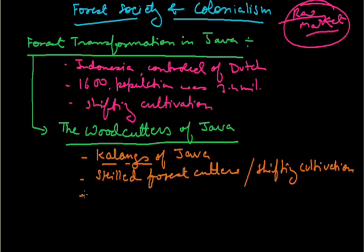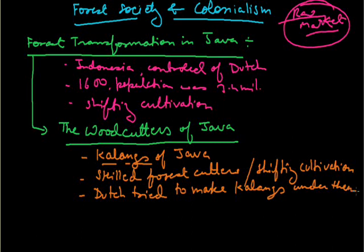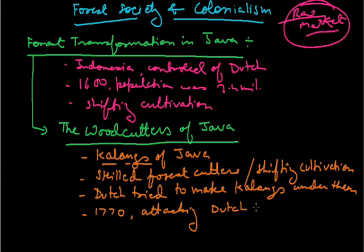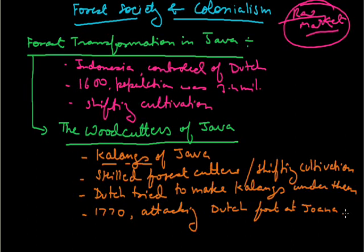When the Dutch made Java their colony in the 18th century, they tried to make the Kalangs work under them. But this community did not accept this. They revolted in the year 1700, attacking the Dutch fort at Jonaha. But as usual, this uprising was suppressed by the Europeans because they had much more advanced technology, new weapons, and a well-managed army.